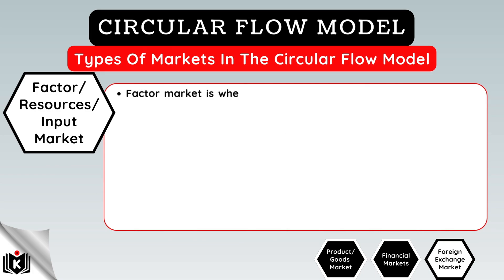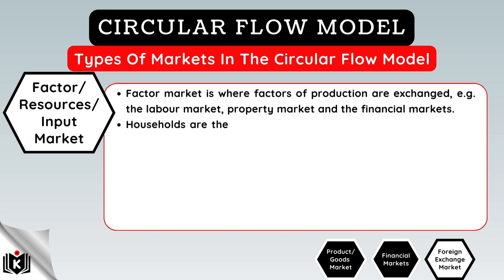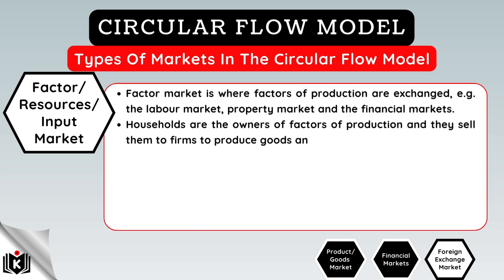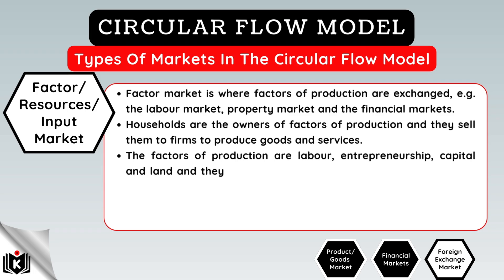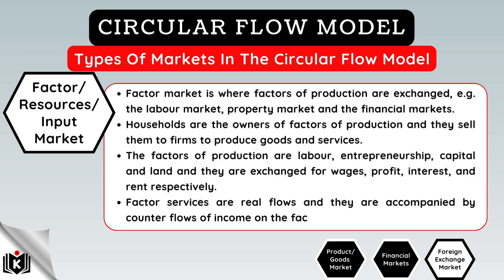The factor market is where factors of production are exchanged — for example, the labor market, property market, and the financial markets. Households are the owners of factors of production and they sell them to firms to produce goods and services. The factors of production are labor, entrepreneurship, capital, and land, and they are exchanged for wages, profit, interest, and rent respectively. Factor services are real flows and they are accompanied by counter flows of income on the factor market.